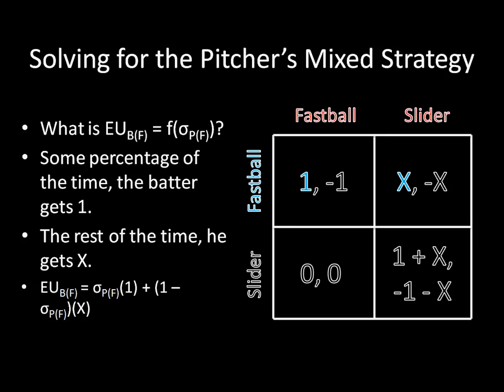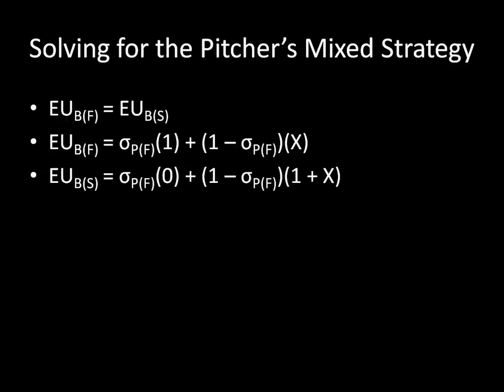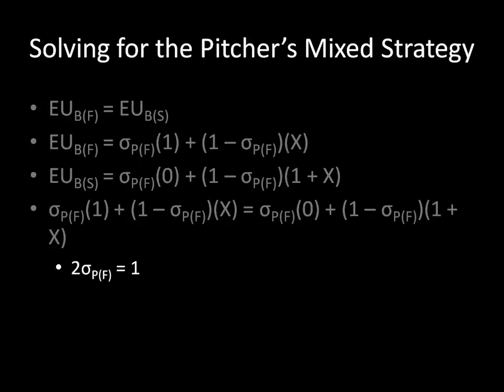Now let's look at the pitcher's mixed strategy. The expected utility of the batter guessing a fastball is sigma times one plus one minus sigma times X. The expected utility of the batter guessing a slider is sigma times zero plus one minus sigma times one plus X. Setting these two equal and solving, we get two sigma equals one, so sigma equals one half. Surprisingly, the pitcher's mixed strategy did not change.